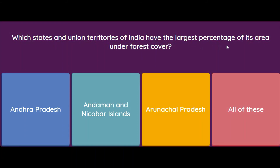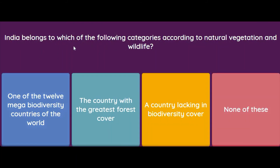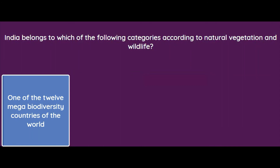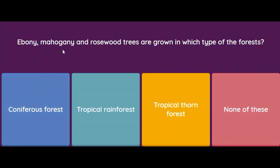Which state or Union Territory of India has the largest percentage of its area under forest cover — Andhra Pradesh, Andaman and Nicobar Islands, Arunachal Pradesh, or all of these? The correct answer is Andaman and Nicobar Islands. India belongs to which category according to natural vegetation and wildlife — one of the 12 mega biodiversity countries of the world, the country with the greatest forest cover, a country lacking in biodiversity, or none of these? The answer is one of the 12 mega biodiversity countries of the world.